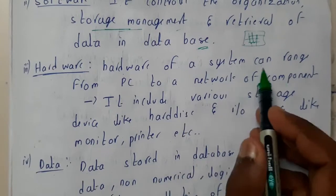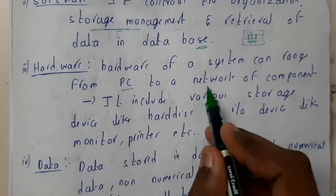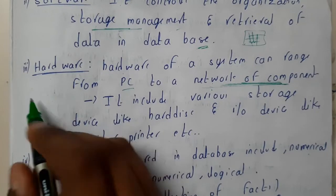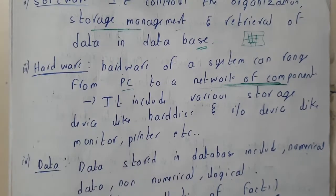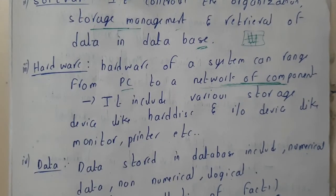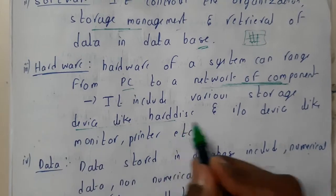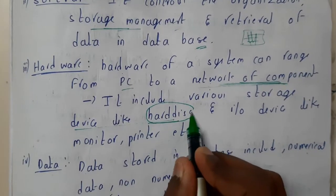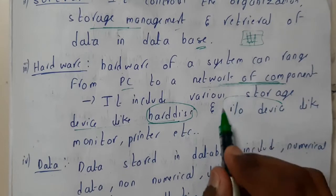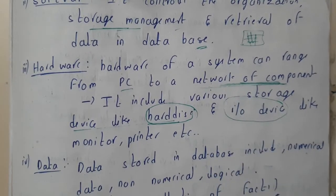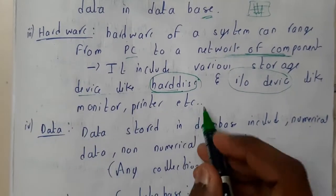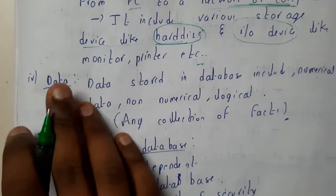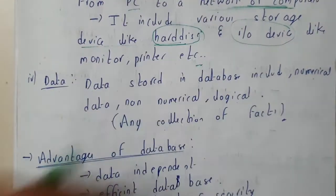Hardware of a system can range from a PC to a network of components. If there are multiple pieces, we will have different variations of hardware. The most common hardware used for storage is the hard disk, and for input and output we have devices like monitors and printers.